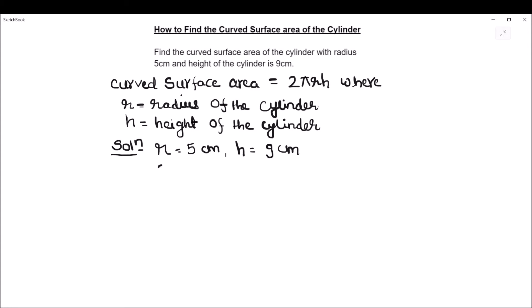Let us substitute the values in our formula. Curved surface area, which I am writing as CSA, equals 2 pi rh. 2 times pi is 22 divided by 7. Radius of the cylinder is given as 5 centimeters and height is given as 9 centimeters.